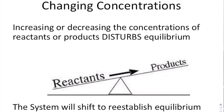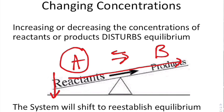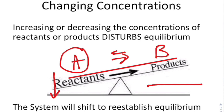For example, in the reaction A going to B, if the system is at equilibrium and you suddenly add more A, the system will make more B to reduce the amount of A, shifting the equilibrium forward until A and B are balanced again.